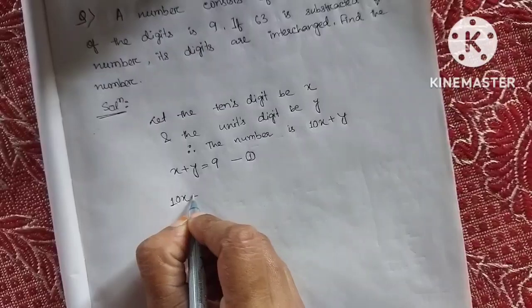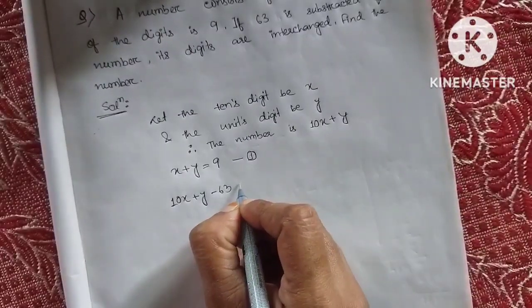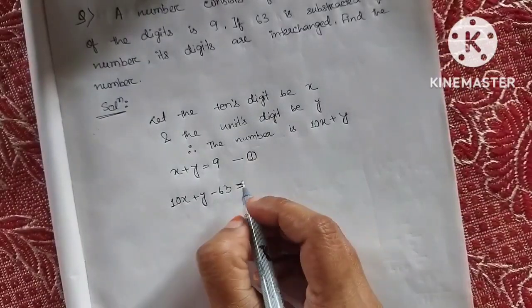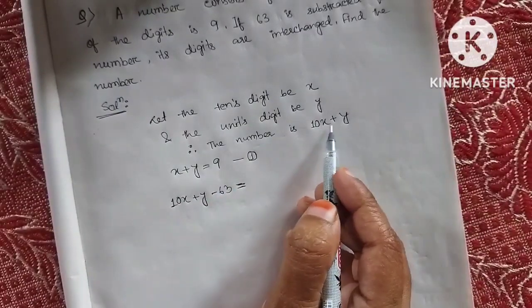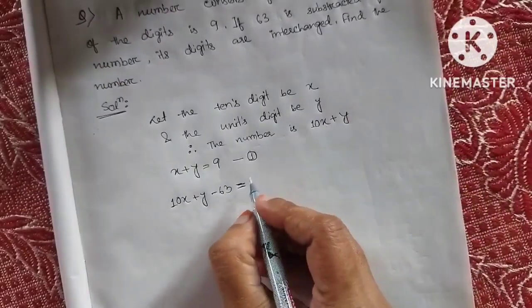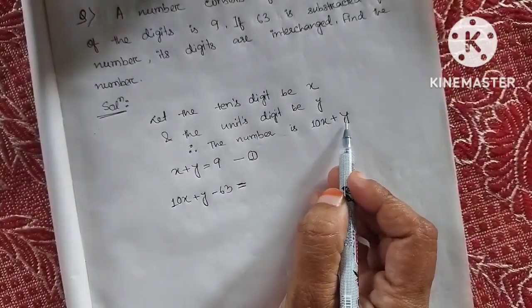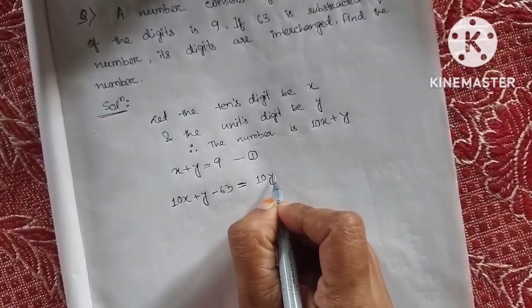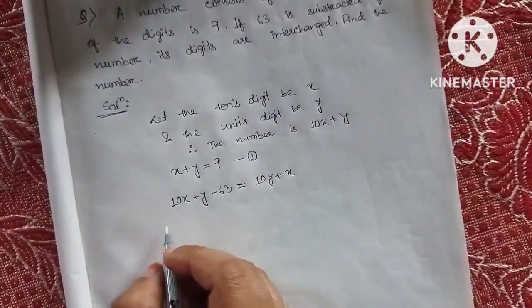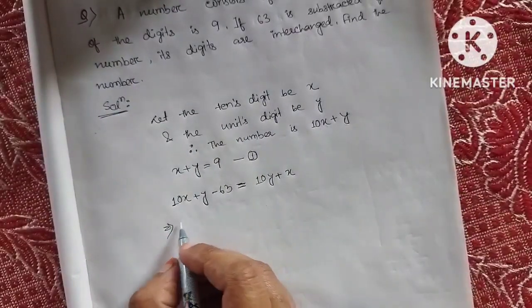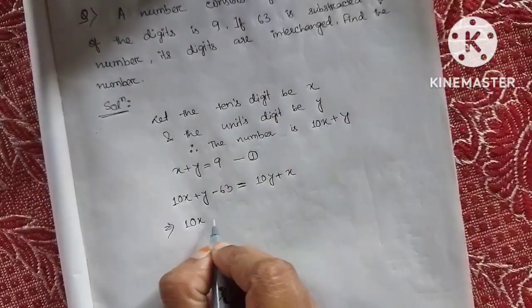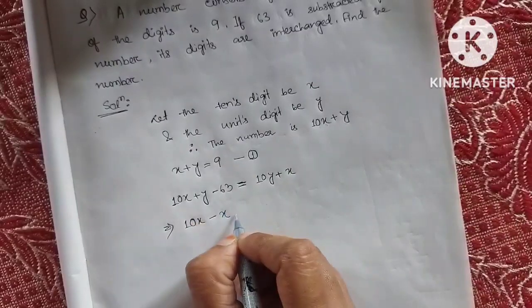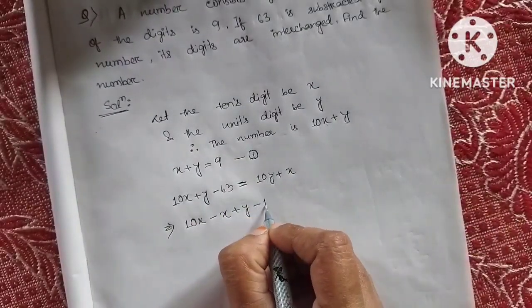So we have 10x plus y minus 63 equal to, this gives us 10y plus x. Let's simplify this. We get 10x minus x plus y minus 10y equals 63, which is 9x minus 9y equals 63.